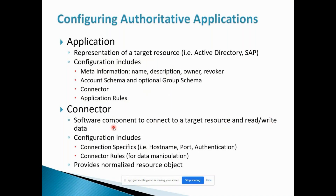Configuration includes connection-specific data like host name, port name, URL, authentication data, etc. Connector rules are for data manipulation — before the data hits SailPoint, if we want to manipulate any data we can do it using connector rules. We can write business logic so that whatever data we require in whatever format, we can do it using this connector rule.